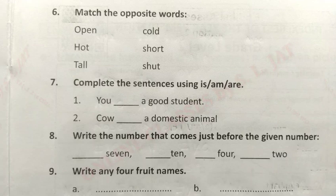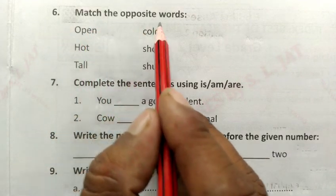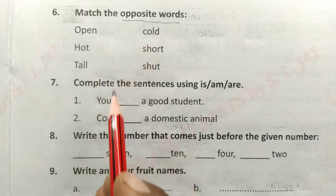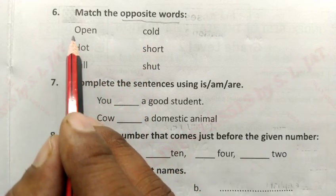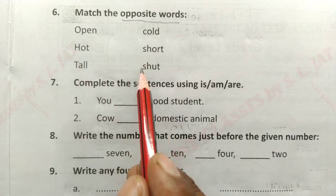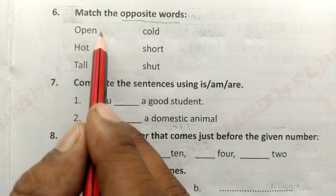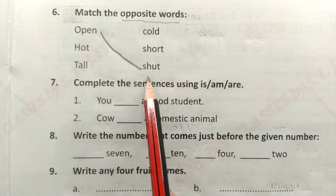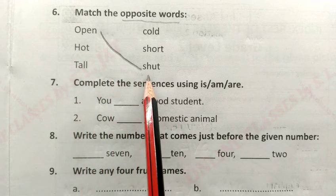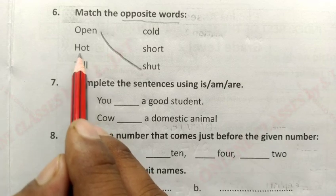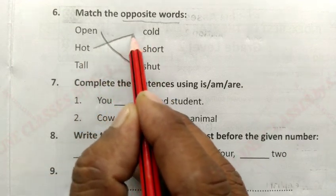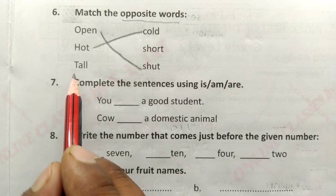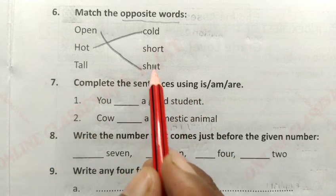Question Number 6: Match the opposite words. Opposite words यानि विपरीत अर्थ वाले शब्दों का match करना है। Open का opposite है S-H-U-T = Shut. Open यानि खुला, Shut यानि बंद। Hot का opposite है C-O-L-D = Cold. Hot means गर्म, Cold means ठंडा।